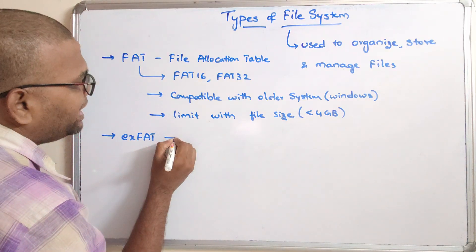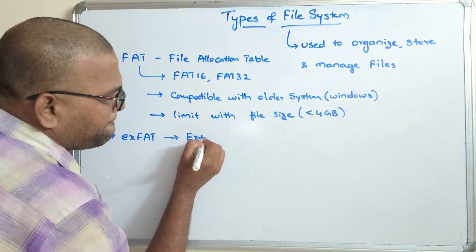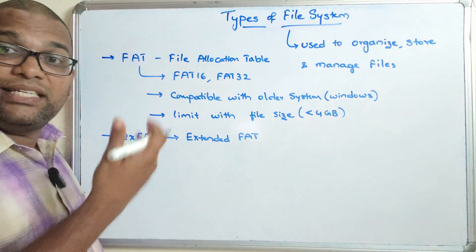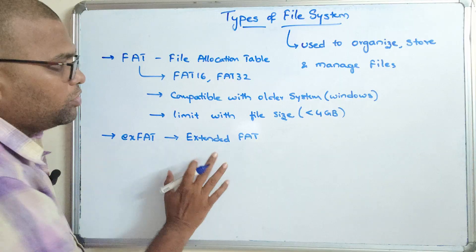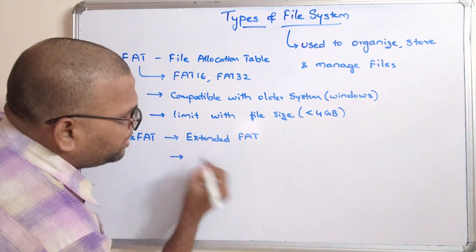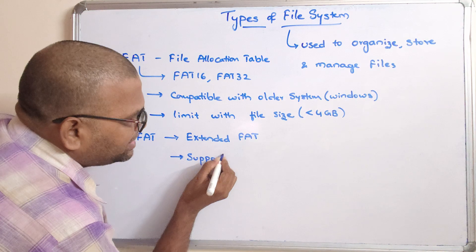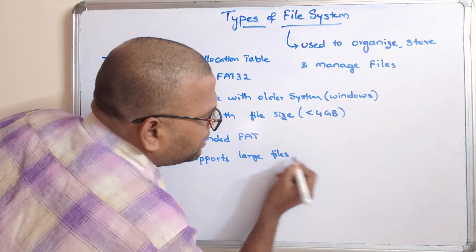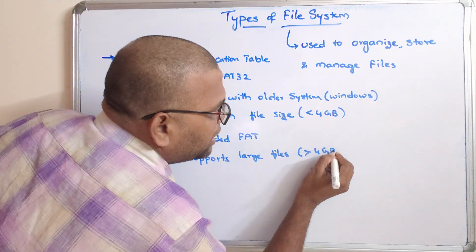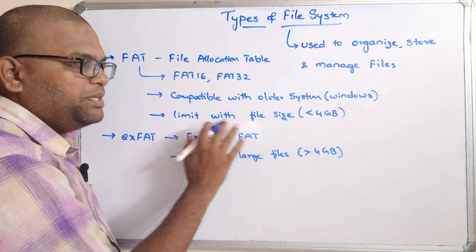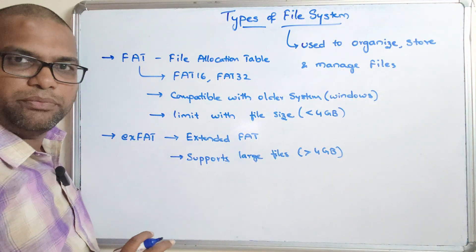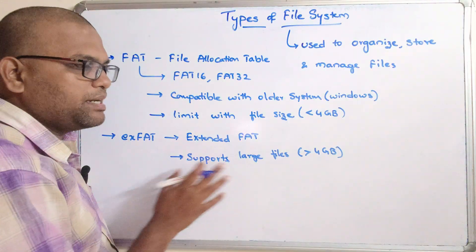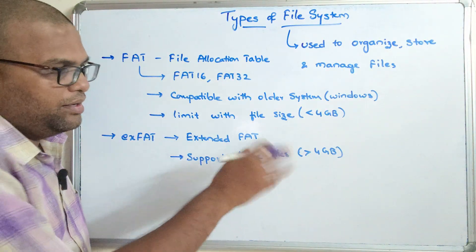There is one more file system called exFAT, which stands for Extended File Allocation Table — an extended version of FAT. This supports larger files, usually greater than 4 GB, whereas FAT16 or FAT32 only supports files which are less than 4 GB.